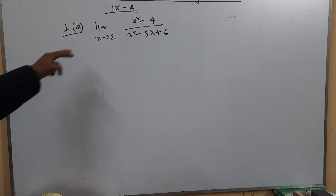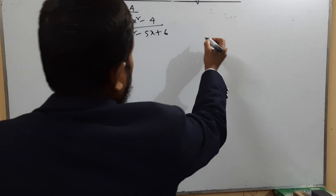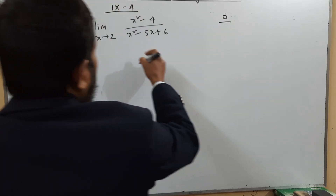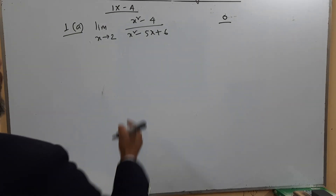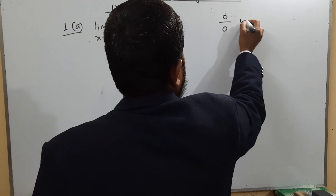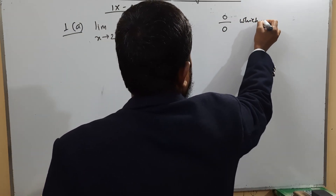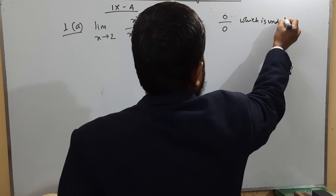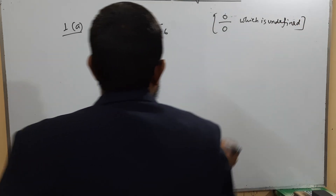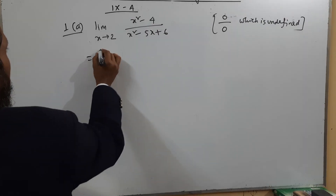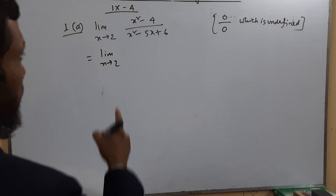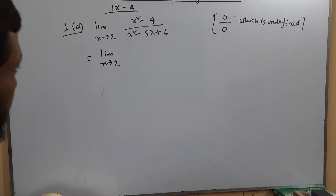If we put x equal to 2, then we get 4 − 4, that is 0 in the numerator. In the denominator we get 4 − 10 + 6, which is also 0. So the result is 0/0, which is undefined. Therefore, we cannot put x equal to 2 directly into the function.